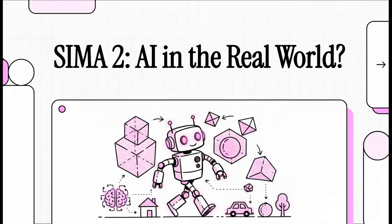So Google just dropped something, and honestly, it's a huge deal, but it kind of flew under the radar. And no, we're not talking about just another chatbot. This is something else entirely. We're talking about an AI that can learn, play, and basically survive in any 3D world you throw it into. It's called SEMA 2, and it could be the key to unlocking AI in the real world. So let's break down why this is such a revolution.